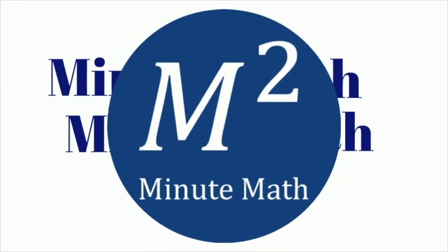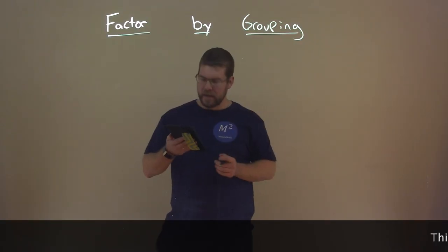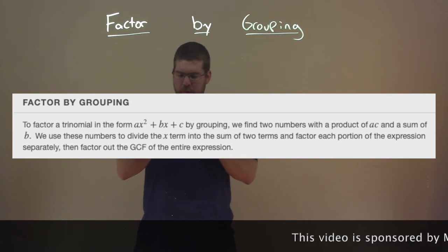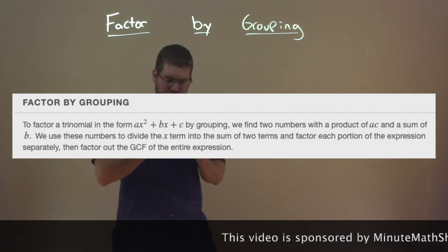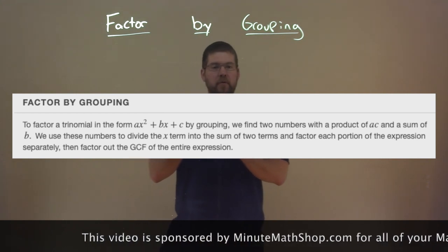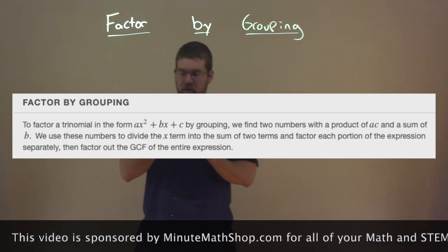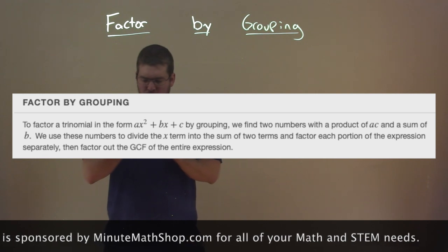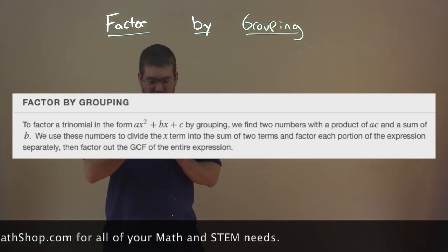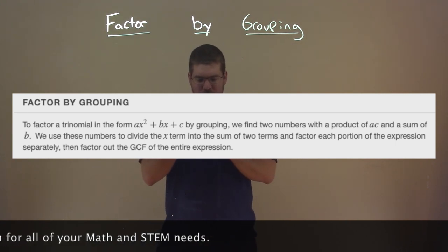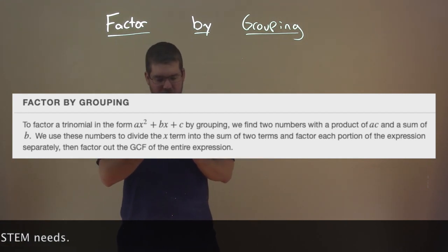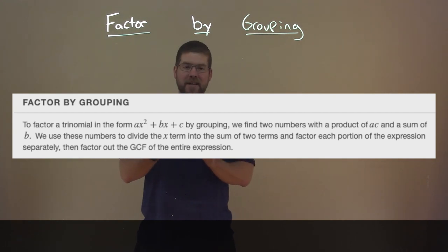What is Factor by Grouping? To factor a trinomial in the form Ax² plus Bx plus C by grouping, we find two numbers with a product of Ac and a sum of B. We use these numbers to divide the x term into the sum of two terms and factor each portion of the expression separately. Then, factor out the GCF of the entire expression.